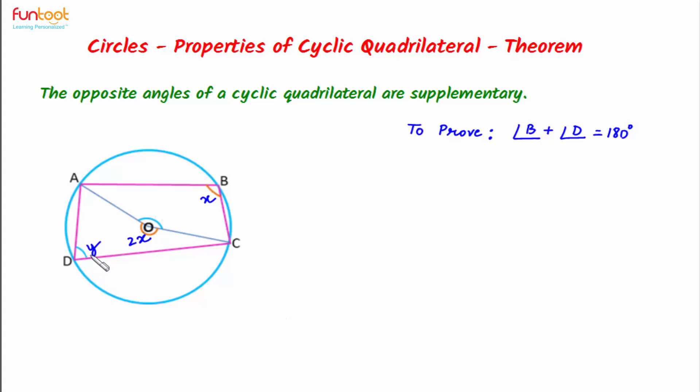Similarly we can see that angle Y is inscribed in the arc ADC. So this angle Y will be half the angle subtended by the arc ABC at the center. So this angle here will be 2Y.